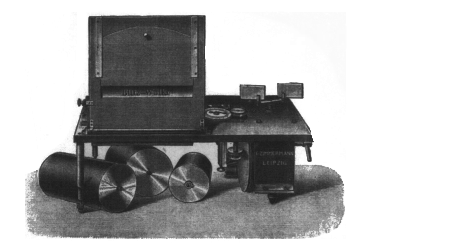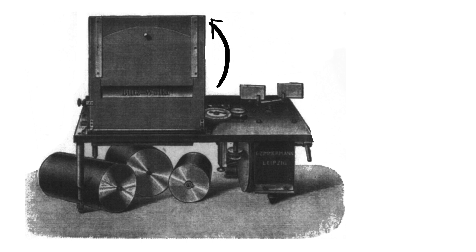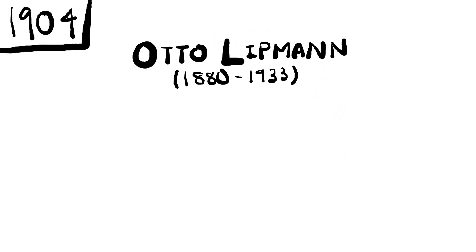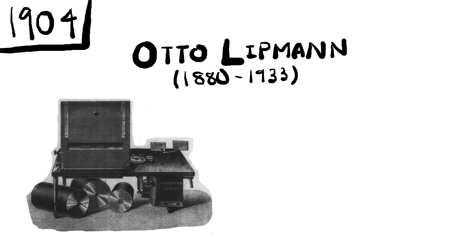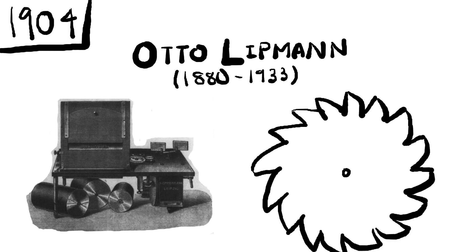One of the major drawbacks of the initial design of the memory drum was its constant movement — it would never pause on one word, but rather just continuously scroll. In 1904, Otto Lippmann, working with Ebbinghaus, redesigned the drum so that each stimulus would be held for a fixed amount of time before moving to the next, by using a notched gear. This solved the problem.